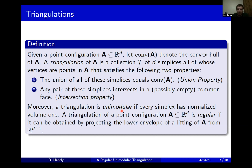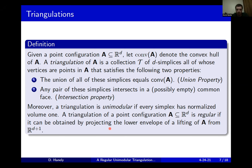We have two extra notions to add to triangulations. A triangulation is said to be unimodular if every simplex has normalized volume one, where by normalized volume I mean you take the Euclidean volume and multiply by the dimension of the polytope factorial. A triangulation of a point configuration is said to be regular if it can be obtained by projecting the lower envelope of a lifting — you take the points in your configuration, lift them into the next higher dimension at certain heights, and project back down into the original ambient space.